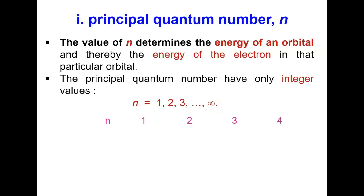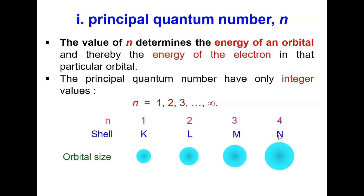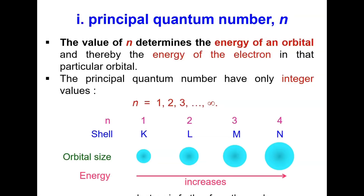In simpler words, N represents the shell. For example, N=1 represents shell K, N=2 represents shell L, and N=3 represents shell M. As the shell number increases, the size of the orbital also increases, and therefore the energy of the electron also increases from N=1 to N=4, meaning the electron is further from the nucleus.